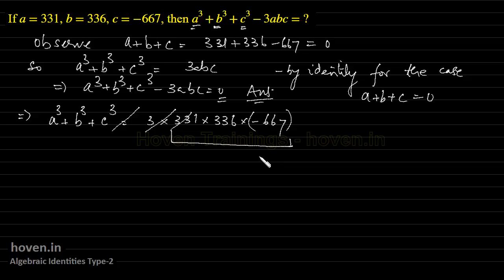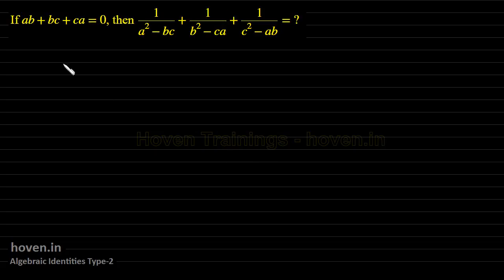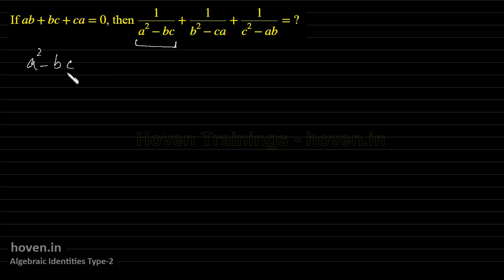Let us take our next question. If ab plus bc plus ca equals 0, then what is 1 by (a² minus bc) plus 1 by (b² minus ca) plus 1 by (c² minus ab)? We will work on the denominator a square minus bc first and find a useful value for it.